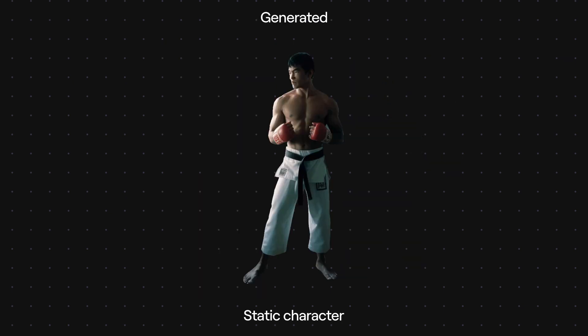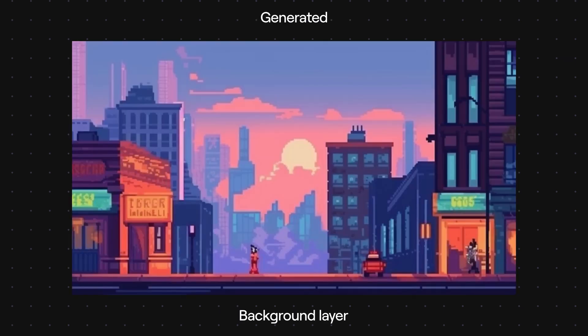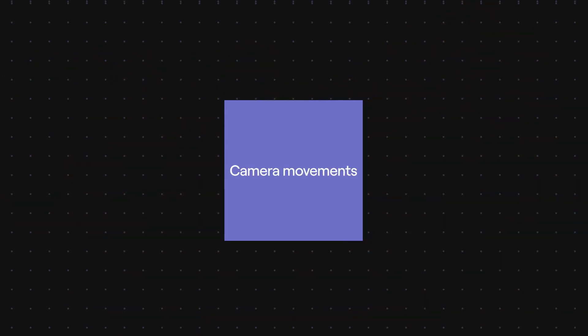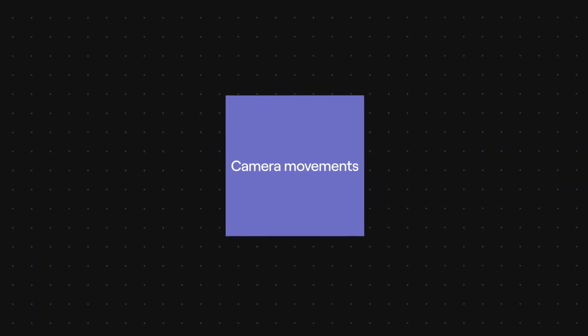A static image of another character, a background layer which has been generated in Runway, an energy blast animation from a stock footage pack, and some post-production camera movements zooming in and out of the scene.